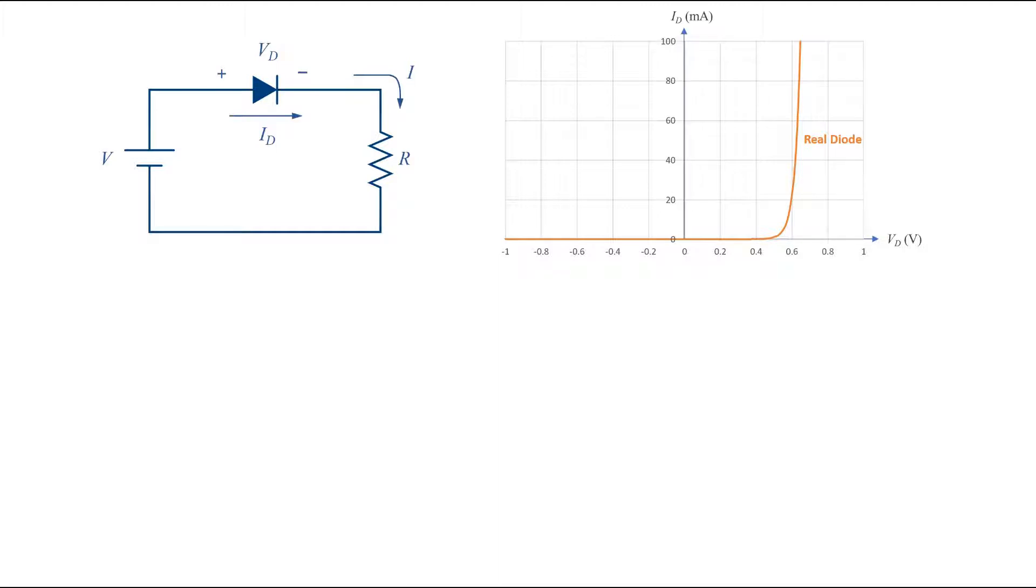So we can break this graph to pieces and represent each piece with a line, and the whole characteristics can be approximated to multiple linear segments or pieces. Because of that it is called a piecewise linear model.